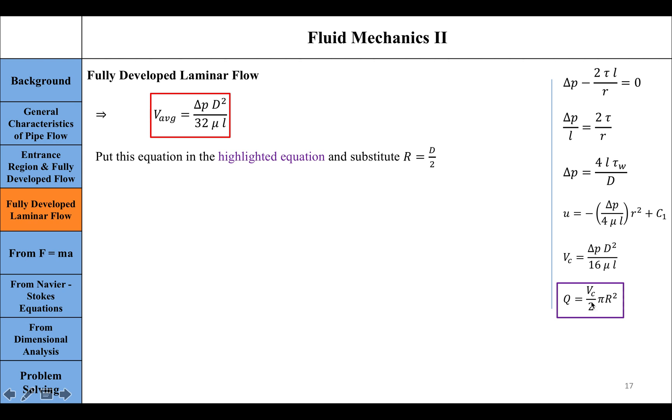Instead of r, substitute d/2. You would get the expression for volume flow rate in terms of pressure drop, diameter of the pipe, and length of the pipe.